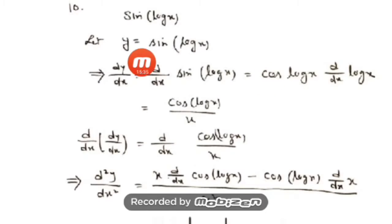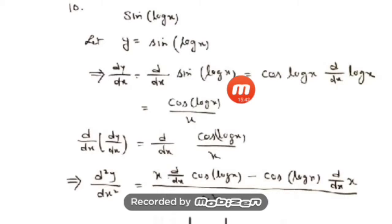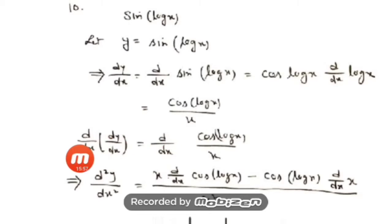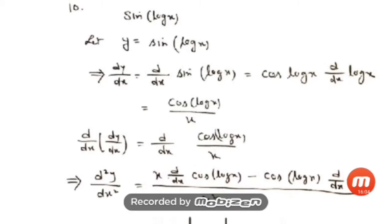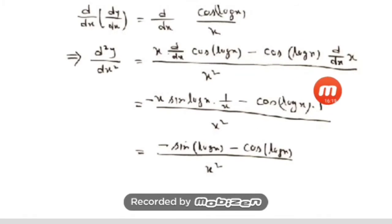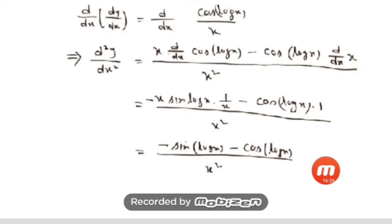One more question: y = sin(log x). dy/dx = cos(log x) · d/dx(log x) = cos(log x)/x. Now differentiate using the quotient rule: d²y/dx² = [x · d/dx(cos(log x)) − cos(log x) · 1] / x². We get x · (−sin(log x) · 1/x) − cos(log x), giving d²y/dx² = [−sin(log x) − cos(log x)] / x².